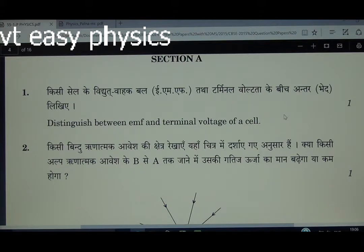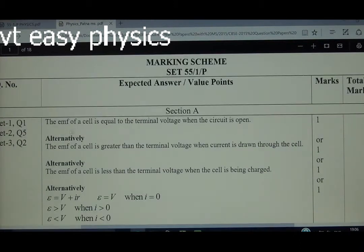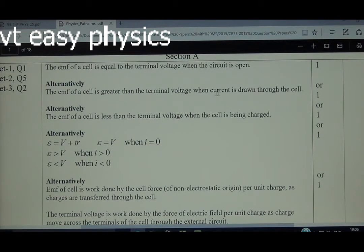TPD means terminal potential difference. EMF is the cause, voltage is the effect. EMF of a cell is equal to terminal voltage when the circuit is open. Alternatively, EMF of a cell is greater than the terminal voltage when current is drawn through the cell. EMF of a cell is less than the terminal voltage when the cell is being charged.